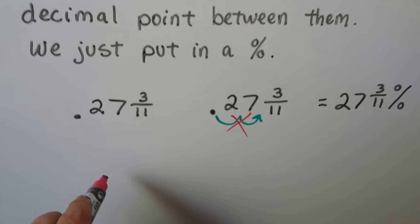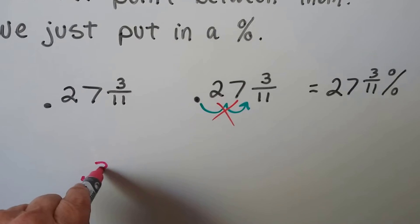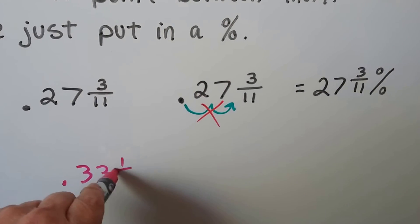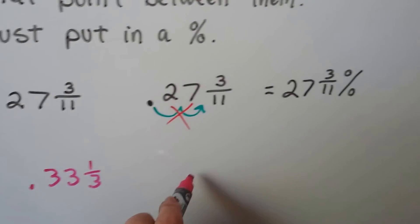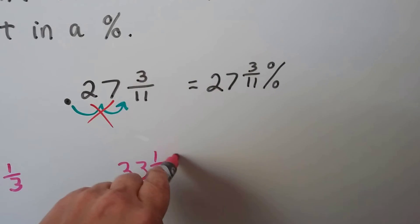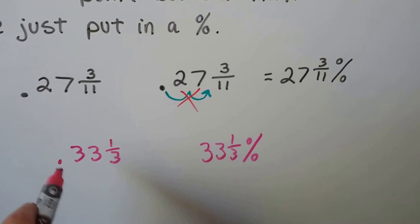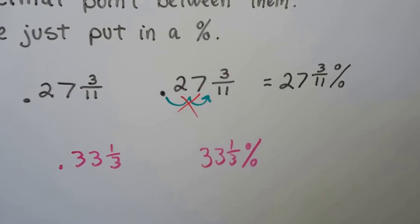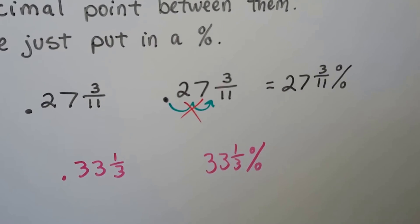So even if it says like .33 and a third, just write 33 and a third percent. You don't put a decimal point in between here, you just write the percentage sign.